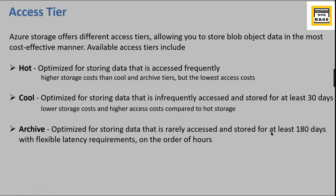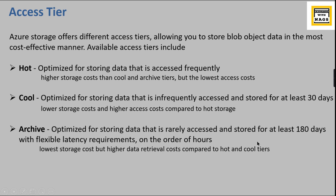Archive tier is optimized for storing data that is rarely accessed and stored for at least 180 days, with flexible latency requirements on the order of hours. This is for archiving purposes — not business-critical data, but things like backups or compliance checks. It has lower storage cost but higher data retrieval cost compared to Hot and Cool tiers.